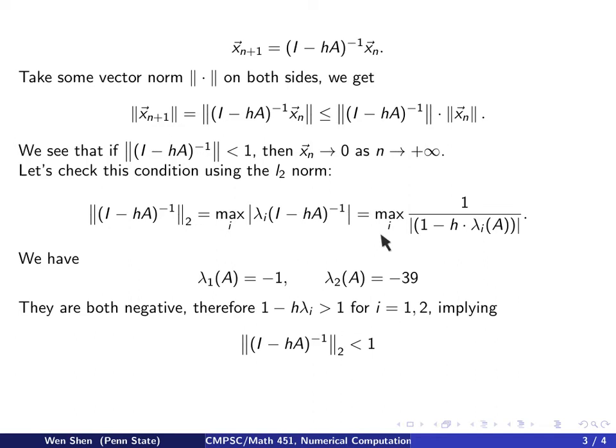And you take maximum over two numbers that are strictly less than 1. The max is strictly less than 1. So this implies the L2 norm of this matrix we started here is strictly less than 1. And then we're done.